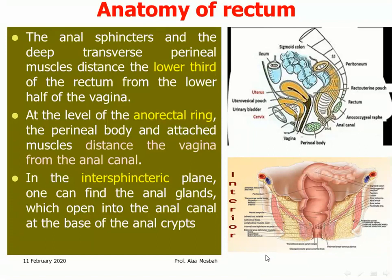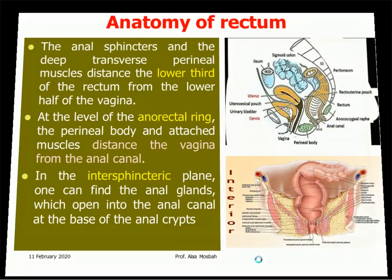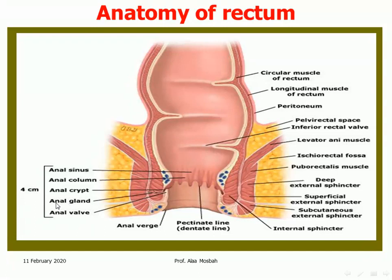At the level of the anorectal ring, the perineal body and its attached muscles distance the vagina from the anal canal. The anal glands open into the anal canal at the base of the anal crypts. As seen in this picture, the internal sphincter and the external sphincter — divided into subcutaneous, superficial, and deep parts — are visible, along with the puborectal muscle, ischiorectal fossa, and levator ani muscle.